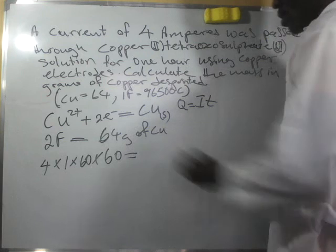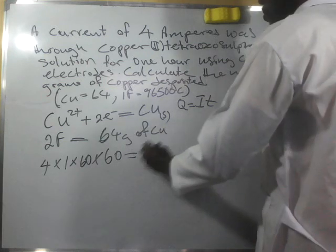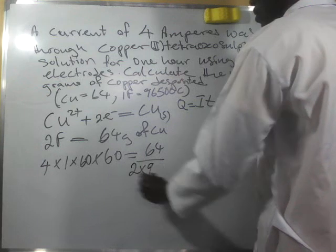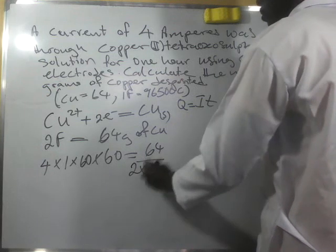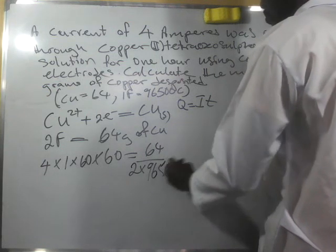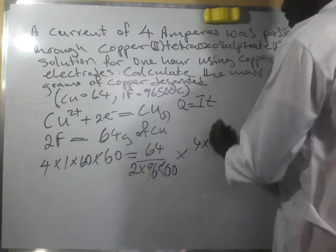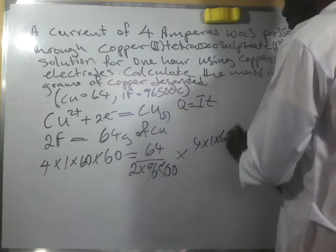So that will give us 64 over 2 times 96500 times 4 times 1 times 60 times 60.